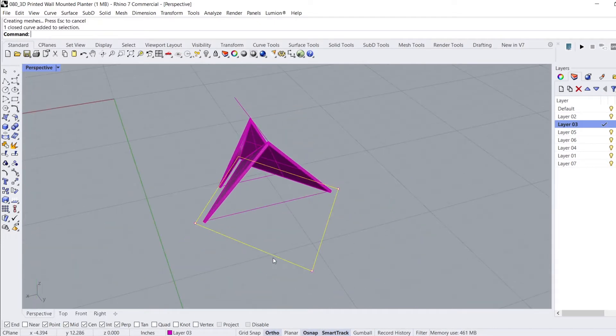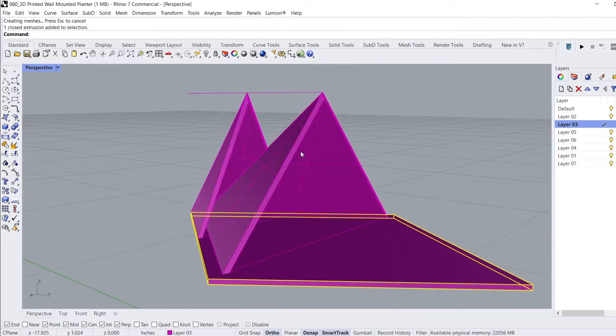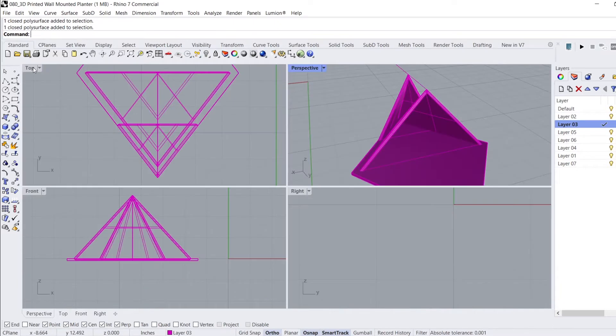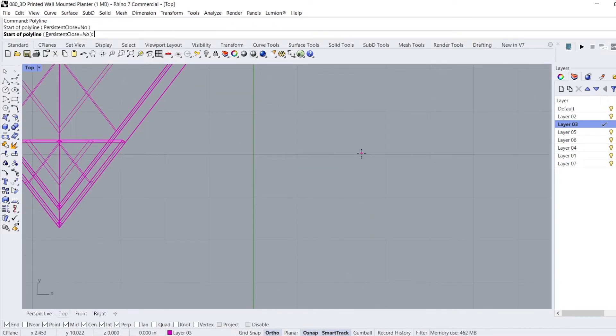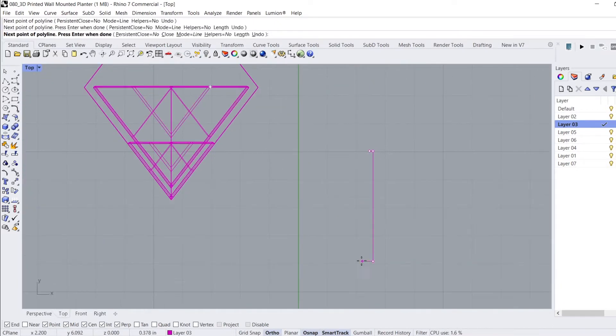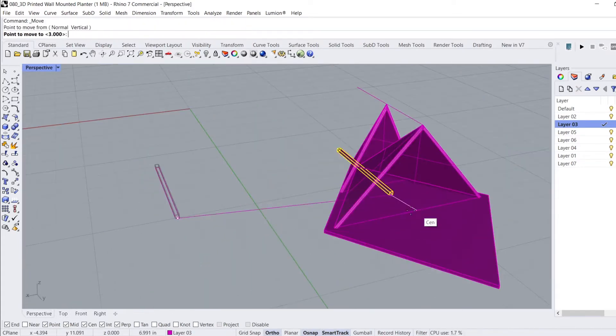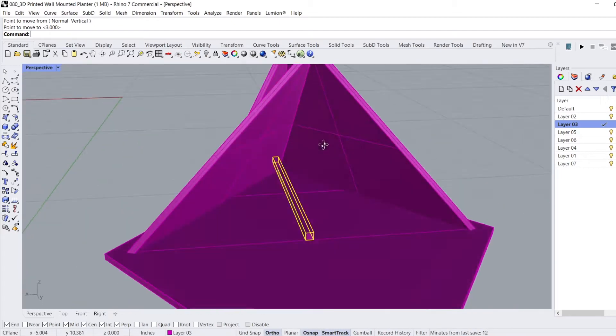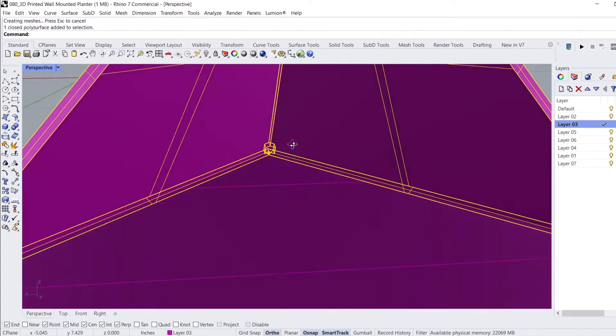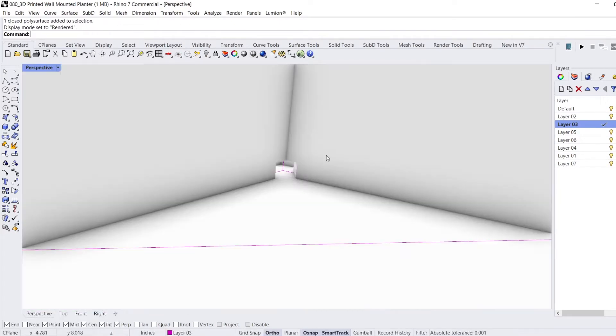To cut a drainage hole through the planter, I draw a 1 eighth inch wide rectangle, use the Extrude command, and pull it to a 1 eighth inch thickness. I use the Move command to center it in the planter, move it down until it's protruding through the planter, and use the Boolean Difference command to cut the shape out of the bottom tip of the planter.